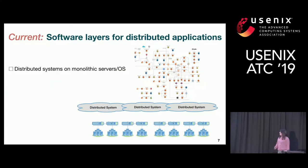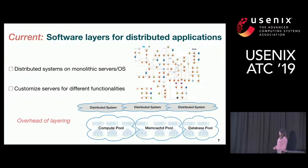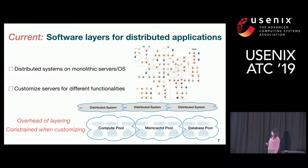The current practice is to run a distributed system on top of a monolithic Linux server, and then group these different server functions into different function pools. But the problem is there's an overhead of having a distributed system interaction layer, and there's only so much you can do to customize a monolithic server and monolithic Linux.